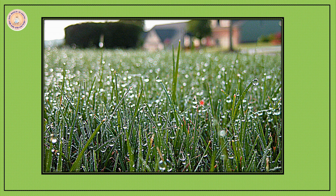During winter nights, you must have seen how the blades of grass or any exposed area outside the house has got tiny droplets of water on the surface. This is called dew. Dew is formed when moist air comes in contact with a cool surface such as grass and condenses into tiny droplets of water.